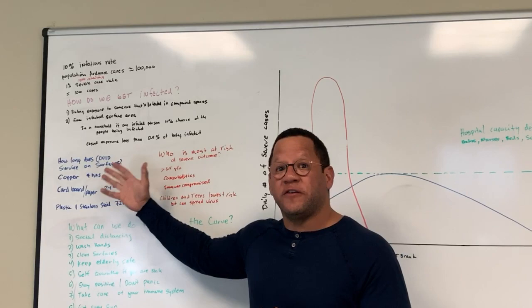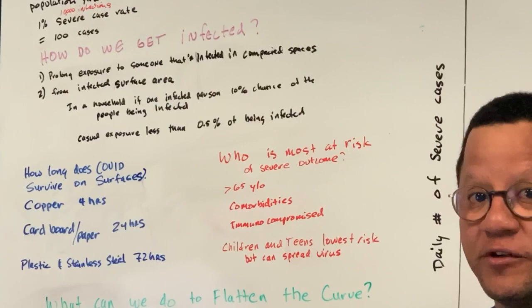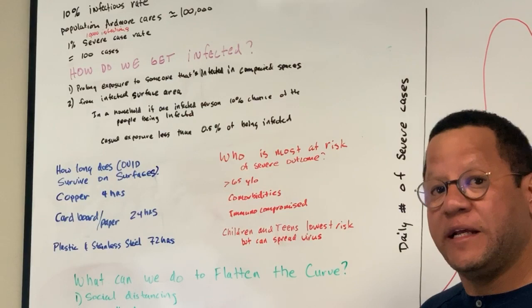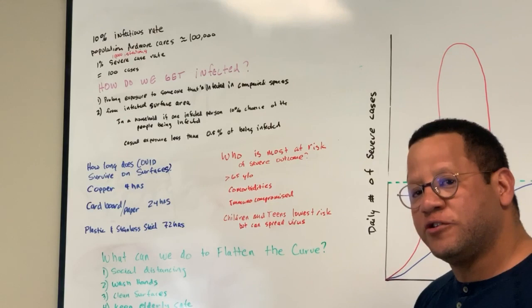How long does COVID live on surface areas? We know that in copper it lives four hours. We know that in cardboard and paper it lives 24 hours. We know that in plastic and stainless steel it lives 72 hours, which is a big amount of time. Who's most at risk of having the severe outcome? Of course, people above the age of 65, people with comorbidities, a lot of different sickness, heart disease, diabetes, lupus, autoimmune issues, asthma, and people that are immunocompromised.